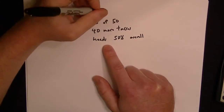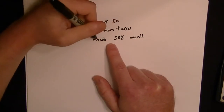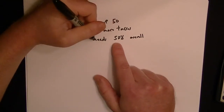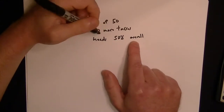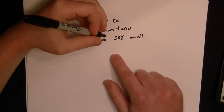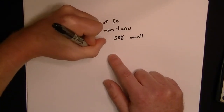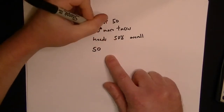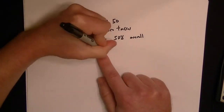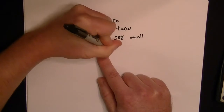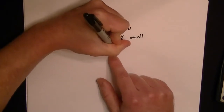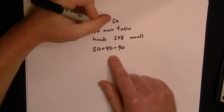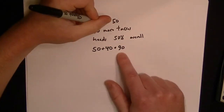The key here is understanding we want to know how many heads it would take for 50% of the overall tosses to be heads. So find out how many tosses there are overall — 50 tosses were already made, but there's going to be another 40 tosses made. That means there's going to be 90 tosses overall.